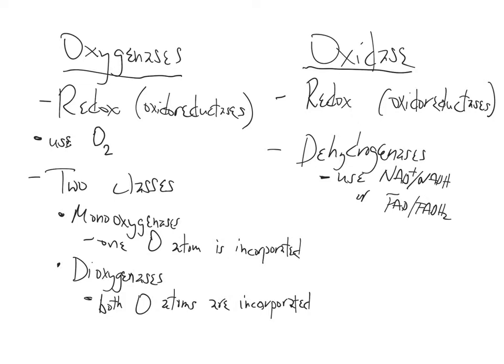These oxygenases are also used to make prostaglandins, eicosanoids, and thromboxanes, which we cover later in the semester. This is just another example of enzyme nomenclature to add to things like polymerases, synthase versus synthetase, kinase, phosphorylase, and phosphatase. Now we have the oxidoreductases: oxidase, reductase, oxidoreductase, dehydrogenase, and oxygenases.